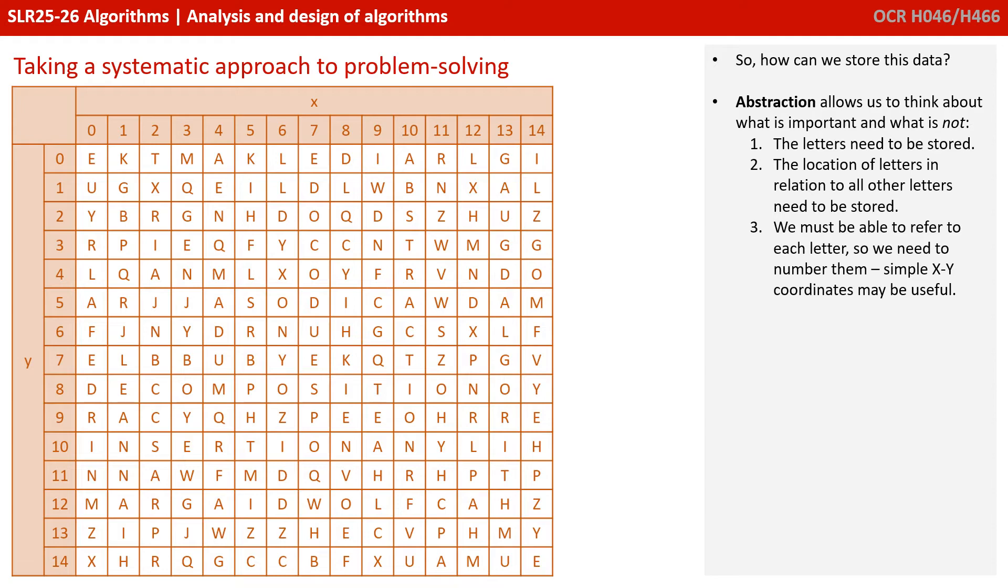So the first thing that we're going to need to do is to think about how we can store our data. If we use the concept of abstraction, we can think about what's important and what's not important in terms of the data we need to store. Clearly the letters need to be stored and the grid is also important because we need to know which letters are connected to which other letters. But we need to be able to refer to them somehow and therefore we could number them.